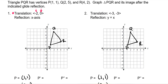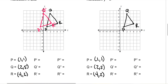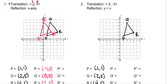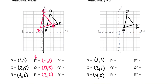For number one I'll do it on the graph then write my points; for number two I'll do it algebraically and then graph. The translation vector negative two, zero means it's moving left two and not going up or down at all, so we move every point left two. P prime is now at negative one, one; Q prime is at zero, five; and R prime is at two, two.